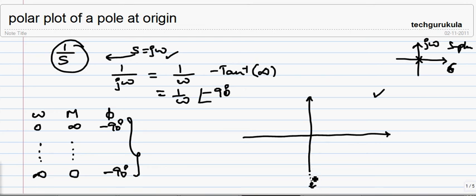As omega is increased, the magnitude decreases, but the phase angle won't change, which means that the plot is going to be on the imaginary axis in the negative direction. We are representing these arrow marks in this way because it represents the way in which omega is increased.